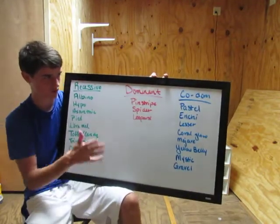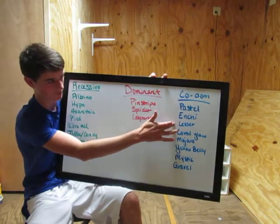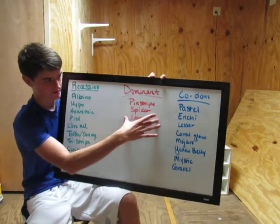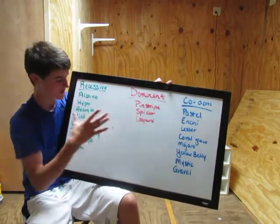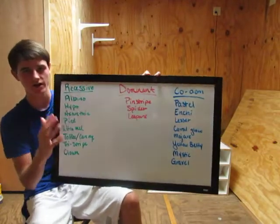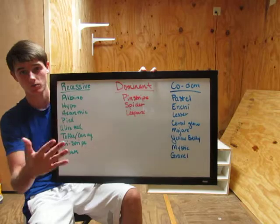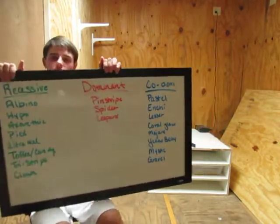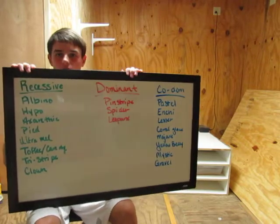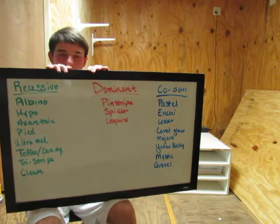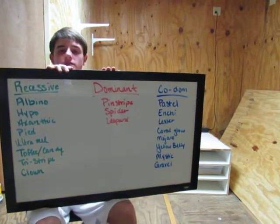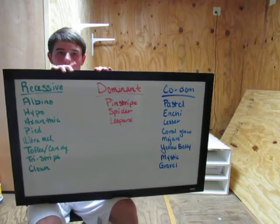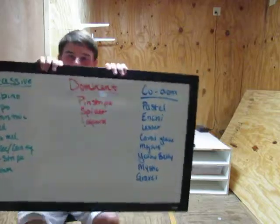I think I pretty much covered that. Codominant — there are super forms of codominant genes. Dominant is the same as codominant except there are no super forms. With recessives, the gene has to be on both sides, mother and father, to be passed on homozygously to offspring. These are just a few of the morphs, by no means all or even a fraction. I hope that cleared up the difference. Don't forget to subscribe and be on the lookout for the next video. Thanks, guys.